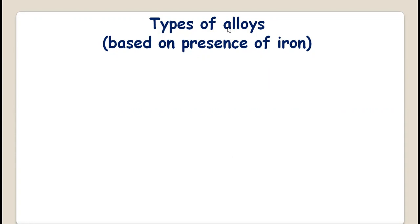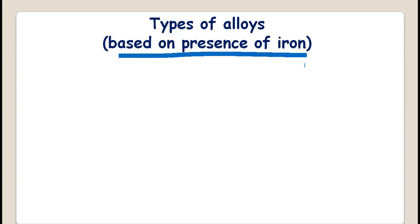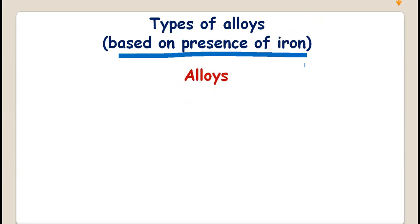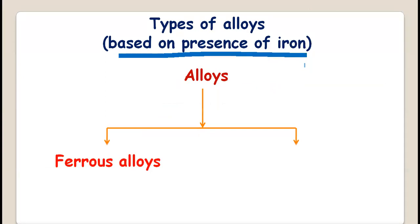If we classify alloys, one classification is based on the presence of iron. So alloys are classified into two types based on the presence of iron: number one, ferrous alloys, and number two, non-ferrous alloys. 'Ferrum' in Latin means iron, so the name itself indicates the difference.